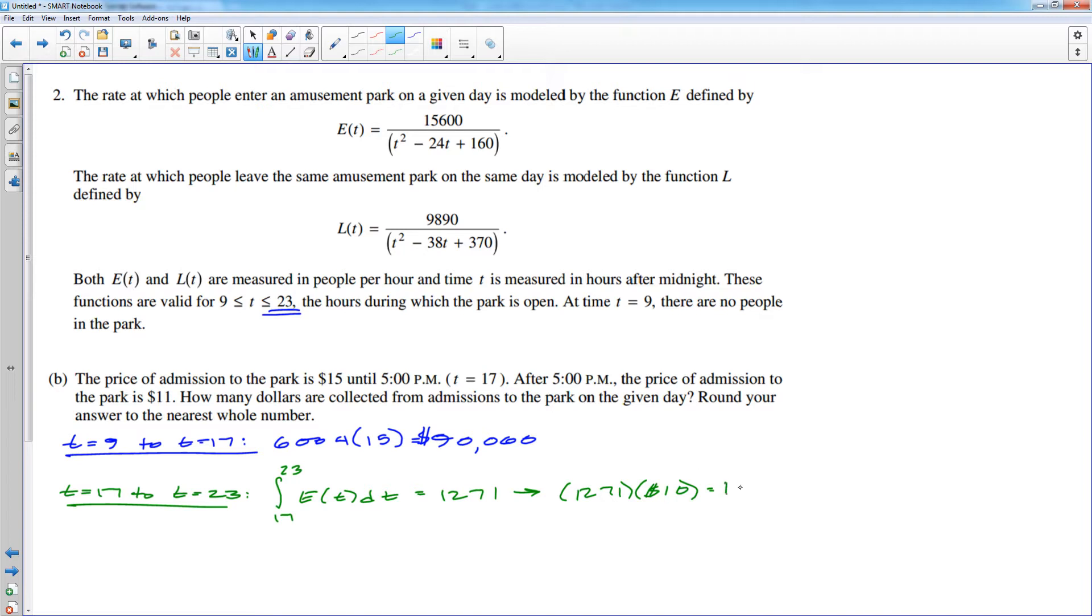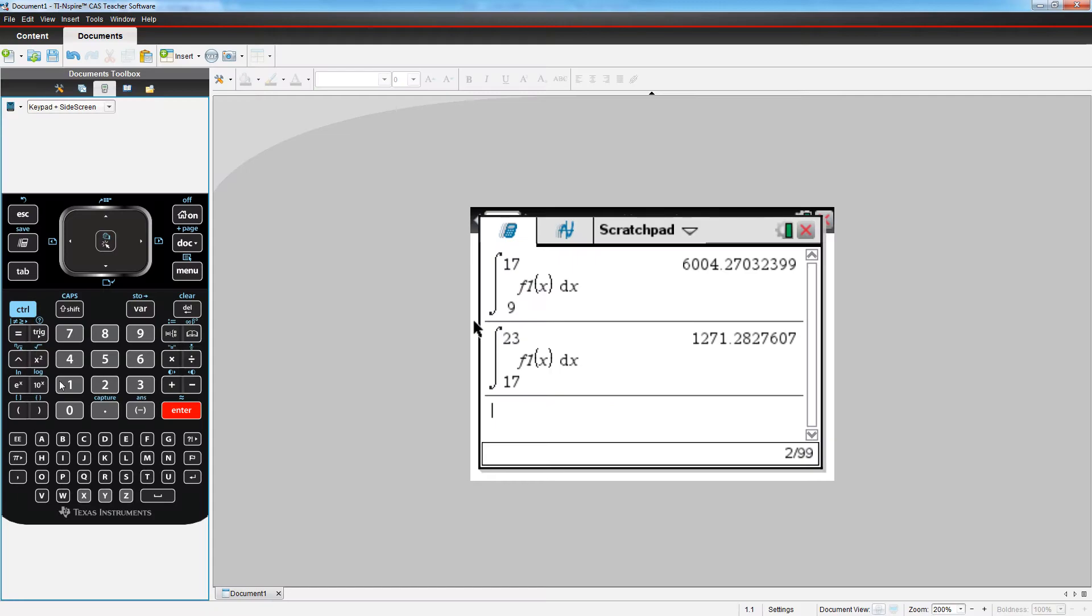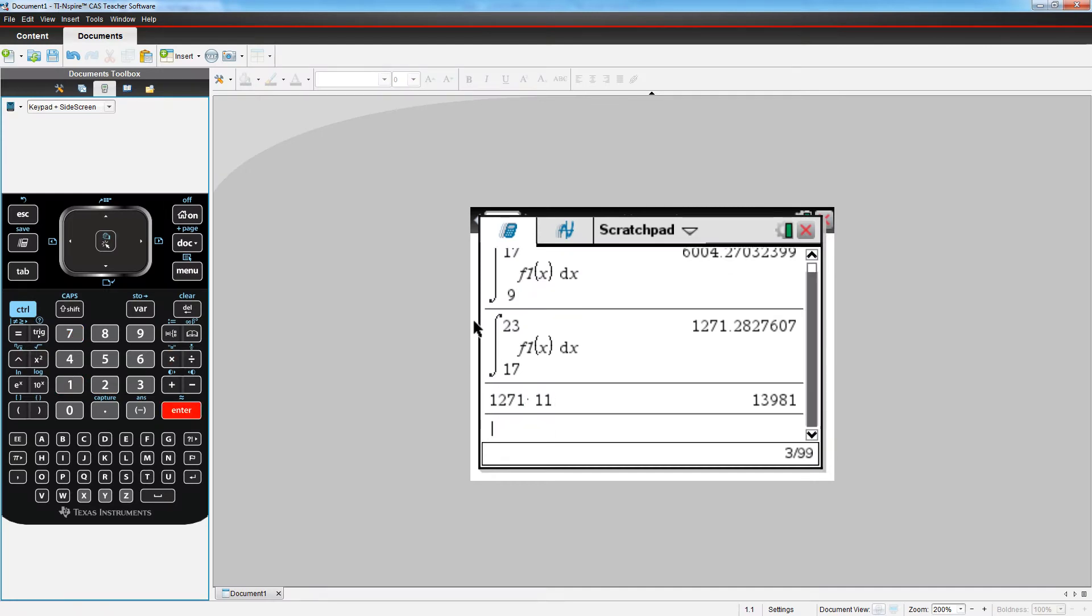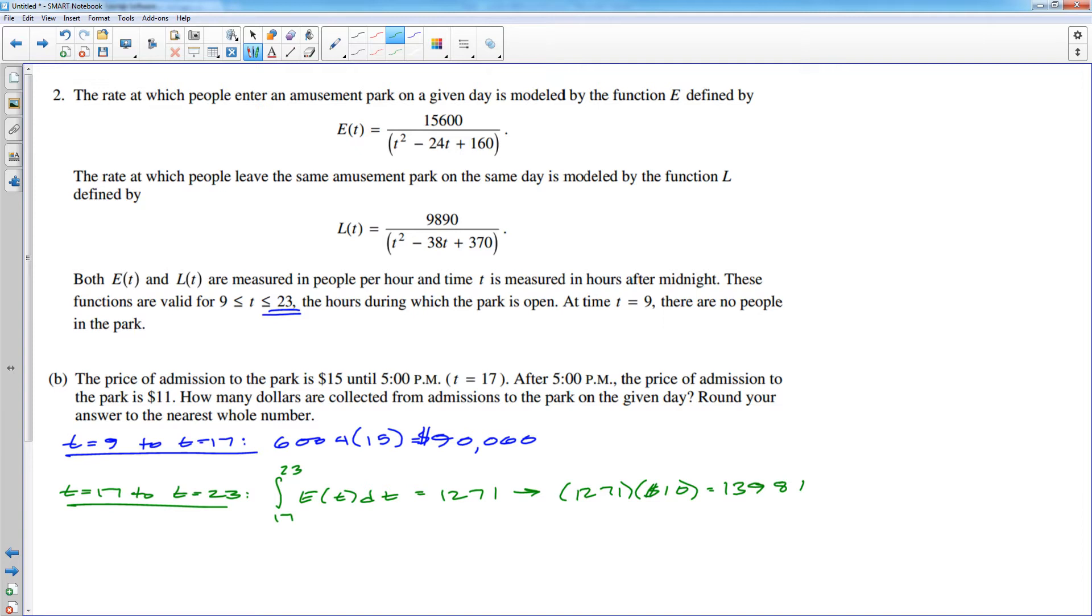So that's 1271. And then the money generated would be 1271 times the $11 per ticket that they paid. And 1271 times 11 is what? One, this is dangerous, let's go to the calculator. 1271 times 11 is 13,981. Hey, that's what I said. It's almost like I'm a math teacher or something. So that's how much money was made from 17 to 23.